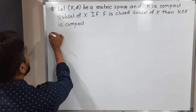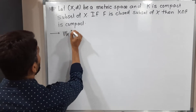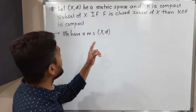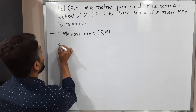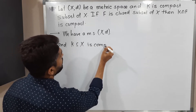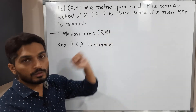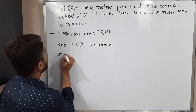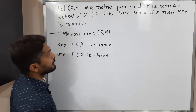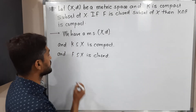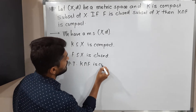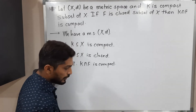We have a metric space (X, d). They have given that K is a compact subset of X, and F is a closed subset of X. What we have to prove is that K intersection F is compact.